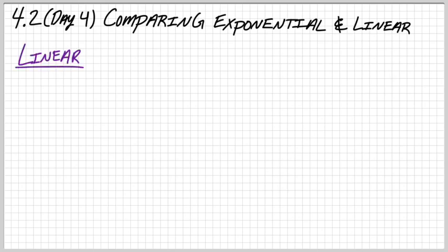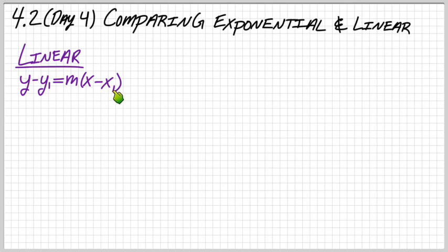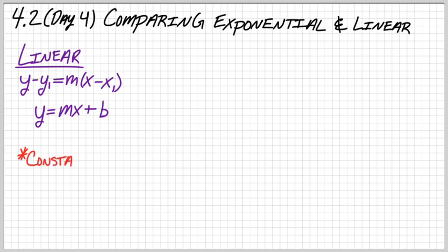For linear functions — things you already know — you could write it in point-slope form: y minus y₁ equals the slope times x minus x₁, where you plug in points for x₁ and y₁, and the slope goes for m. Or you can put it in slope-intercept form: y equals mx plus b. The big takeaway for linear functions is they have a constant slope, a constant rate of change.